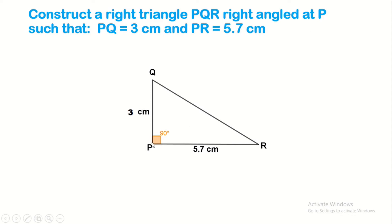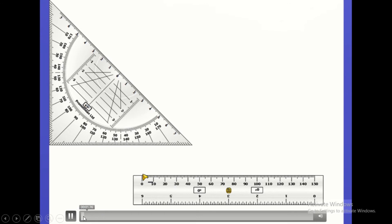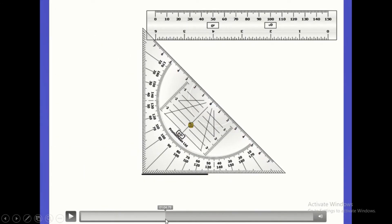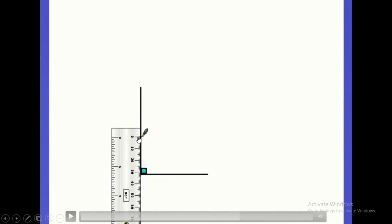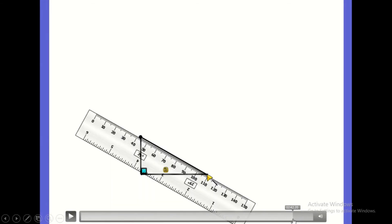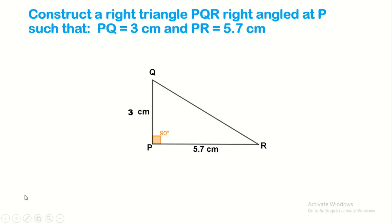To construct right triangle PQR, right-angled at P, with PQ equal to 3 centimeters and PR equal to 5.7 centimeters: we start by drawing PR equal to 5.7 centimeters. We place the set square aligned with the straight line so that the 90-degree corner is exactly at point P, then draw the perpendicular side. We mark PQ at 3 centimeters and join it with the extremity. Here is our right triangle PQR, right at P.